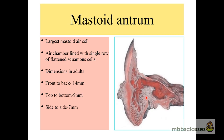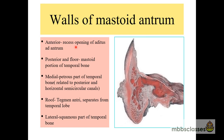This is the mastoid air cell system. You can see here these mastoid air cells — they are not of similar size and shape; there are multiple air cells of different sizes. The most constant air cell is known as the mastoid antrum. The anterior wall of the mastoid antrum is formed by a recess — it is actually an opening of the aditus ad antrum which connects the epitympanum with the mastoid cavity. The posterior wall and floor are formed by the mastoid portion of the temporal bone.